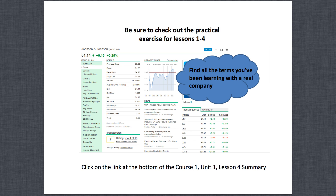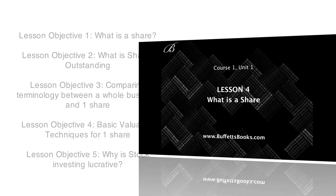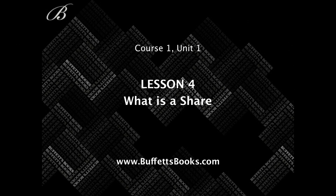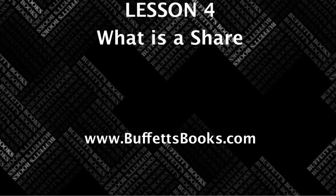That pretty much summarizes the lesson objectives. At the bottom of the lesson webpage I have a practical exercise where I take you through a real company on the internet and show all the terminology we've been learning through the last four lessons — including where to find the book value and the earnings per share. Click the link below on this lesson's page. To recap: we learned what a share is, what shares outstanding means, compared terminology between a whole business and one share, learned the P/E ratio, and learned why stock investing is so lucrative.